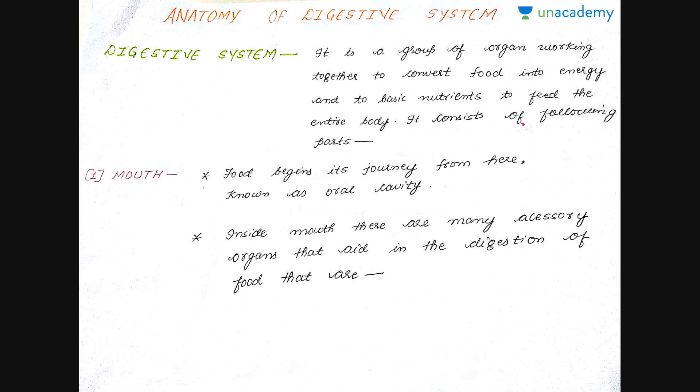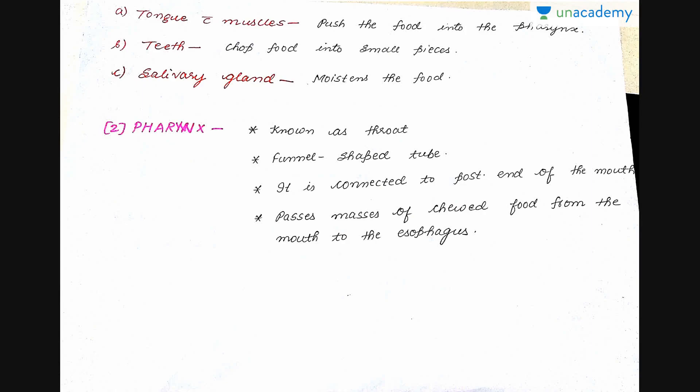The first accessory organ is the tongue with its muscles, which pushes the food into the pharynx. The second one is the teeth, which chop the food into smaller pieces. The third one is the salivary gland, which moistens the food. When the salivary gland moistens the food, it helps for easy passage as well as easy digestion of the food further.